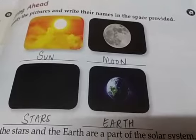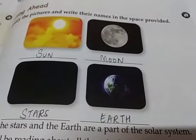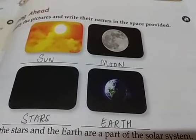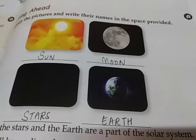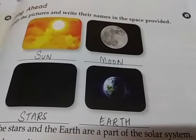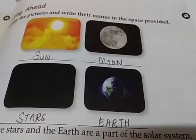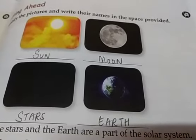The sun, the moon, the stars and the earth are a part of the solar system. So what does our solar system have? It has the sun, the moon and the stars and also many planets.